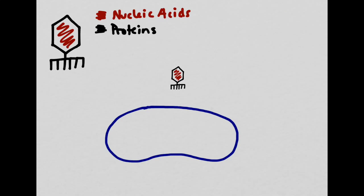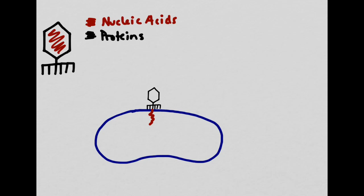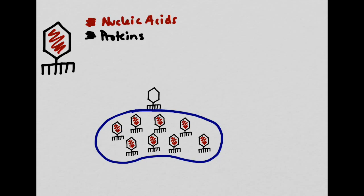Bacteriophages reproduce by attaching to the outside of a host cell. Then they inject their genetic material into it. The protein coat stays on the outside of the host cell. The DNA from the bacteriophage then causes the cell to stop whatever it was doing and begin producing copies of the bacteriophage. The new bacteriophages are identical to the parent bacteriophage that originally infected the cell. The host cell then explodes, releasing all of the new bacteriophages, which then go out and infect even more cells.